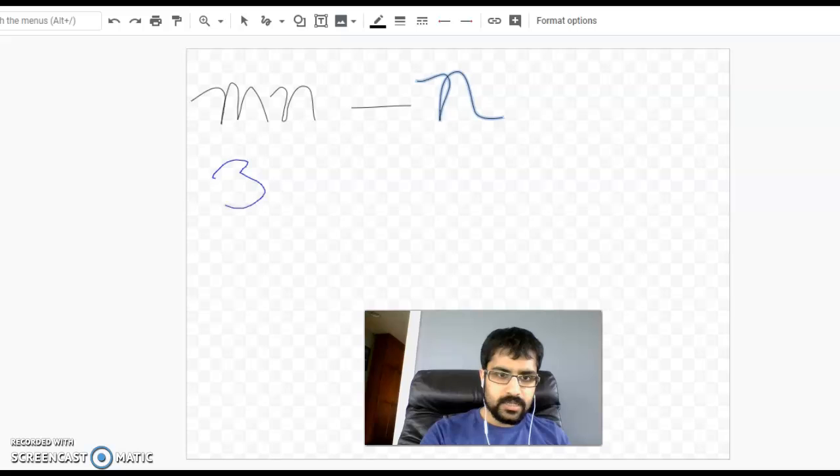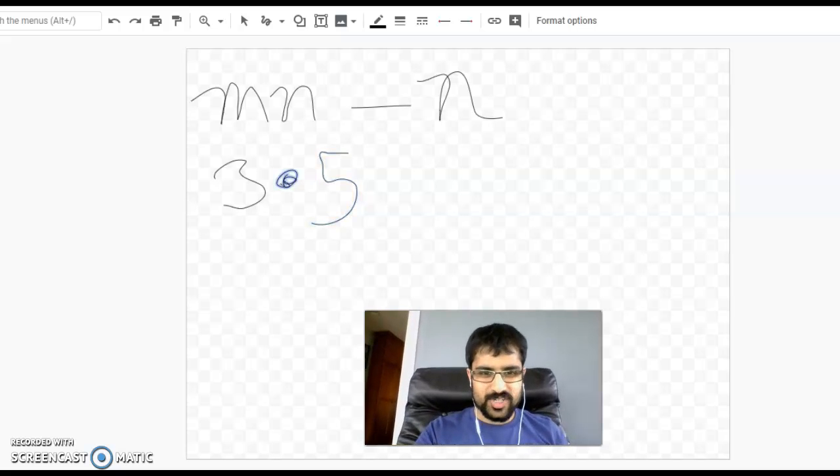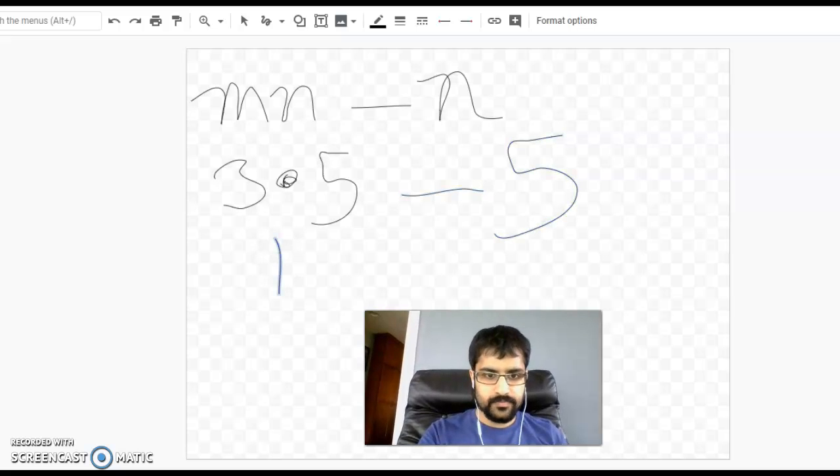So I've got 3 times 5, and then I'm subtracting N again, which again is 5. So I multiply first. And I'm left with 15 minus 5. And then I subtract 15 minus 5, and my final answer is 10.